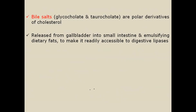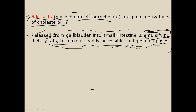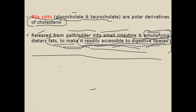Bile salts, for example glycocholate and taurocholate, are polar derivatives of cholesterol released from the gallbladder into the small intestine. The function of bile salts is to emulsify dietary fats, making them accessible to digestive lipases, and they initiate digestion inside the small intestine.